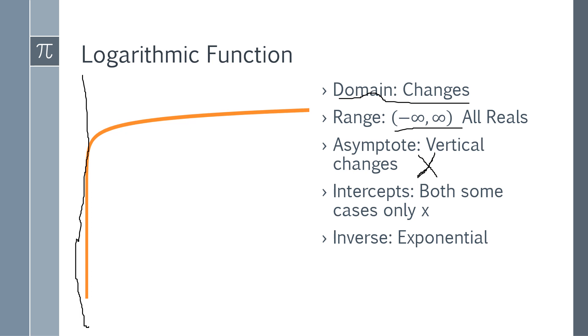You are struggling with the word asymptote, go back to previous videos and do that. Your intercepts. Sometimes you are going to have a y-intercept, but the majority of the time, you are going to have x. Sometimes you will have a y, but the majority of the time, it is going to be an x-intercept. It depends on the function. And your inverses are always going to be exponential.